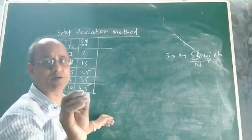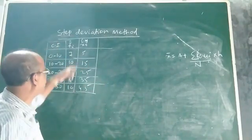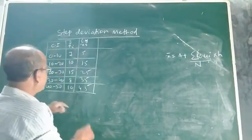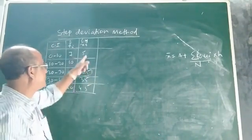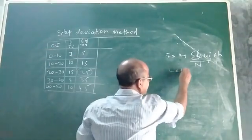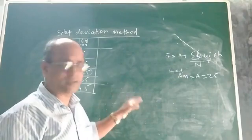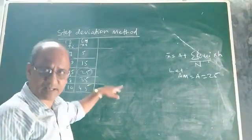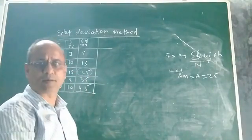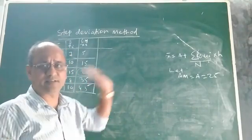After getting Xi, you have to choose an assumed mean from the Xi column. You can choose any one of these values. In the shortcut method, I mentioned you can choose any one. Suppose we choose 25 as the assumed mean, so let the assumed mean A = 25.